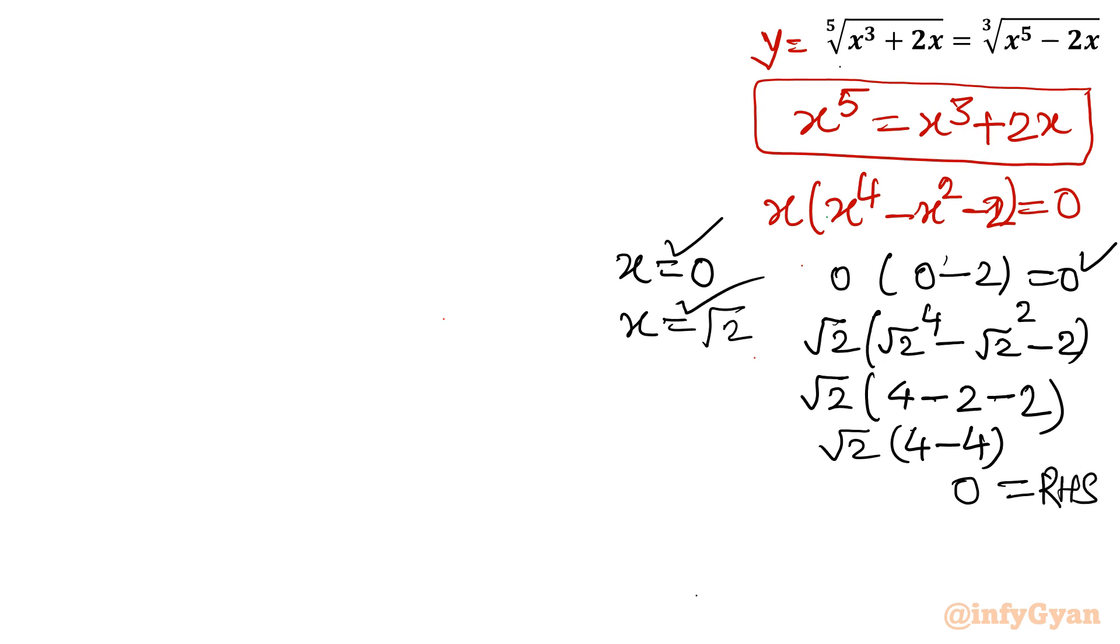Now come to the last value which is minus square root 2. Minus square root 2 in bracket. See it won't affect the result because all powers are even. Let me write minus whole power 2 minus 2. So it will be same, means 4 minus 2 minus 2. So value will come out 0, which is our RHS. So this value is also true.